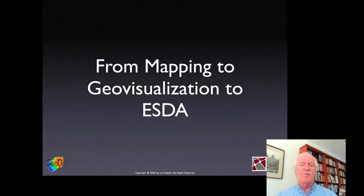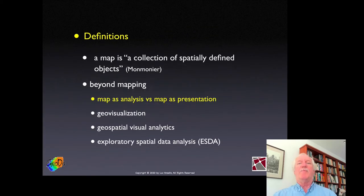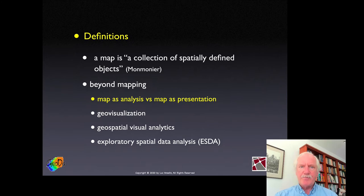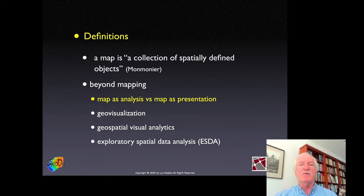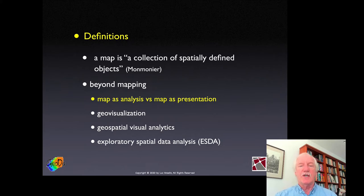First, some terminology. What is a map? You probably never think about it, and there are many definitions out there. The one I like is by Mark Monmonier, a noted cartographer, who calls it a collection of spatially defined objects. A spatially defined object can be any number of different things — what we saw last week: our fundamental geometric entities — points, lines, polygons, networks — but they could also be symbols, little churches, street intersections, and things like that.